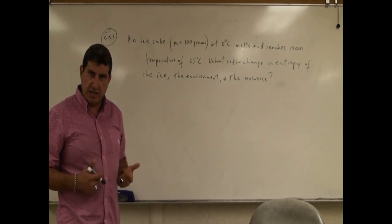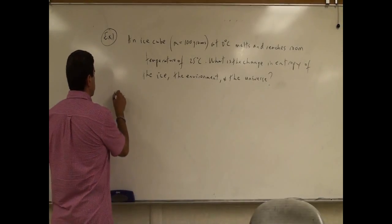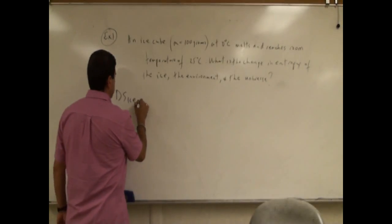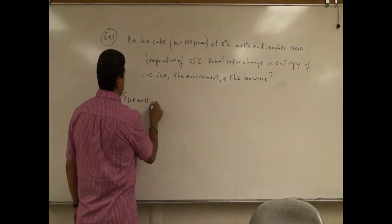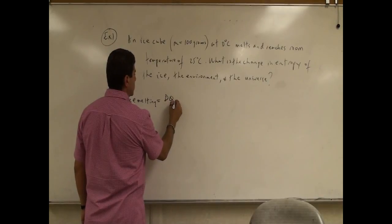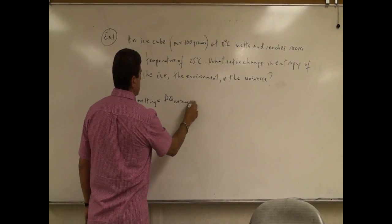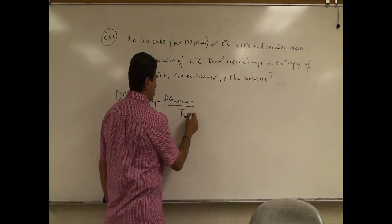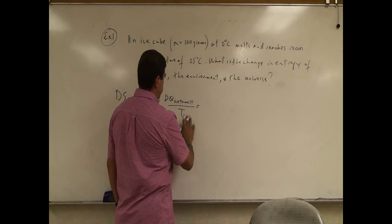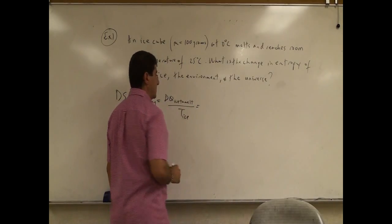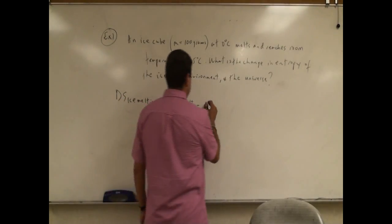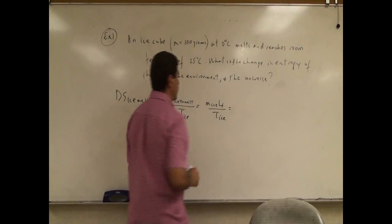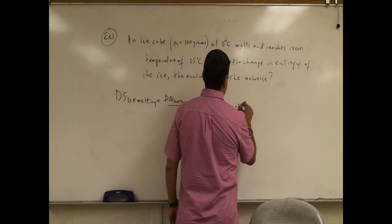Let's see what's happening as a result of the melting of the ice. The change in entropy of the ice in the melting process — just due to the melting — is the amount of heat that went into the ice to melt it divided by the temperature of the ice. So that's the mass of the ice times the heat of fusion of ice, over the temperature of the ice. The mass of the ice we can change to kilograms: 0.1 kilogram.